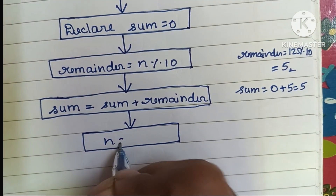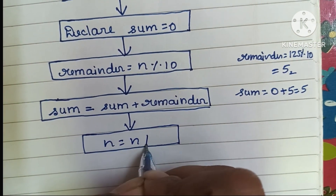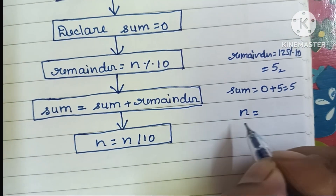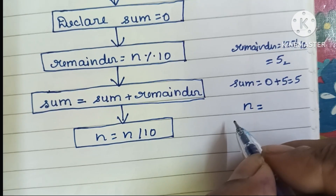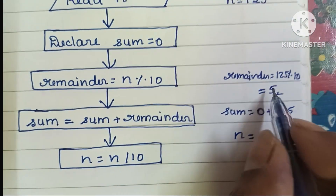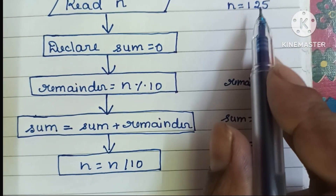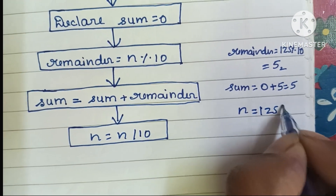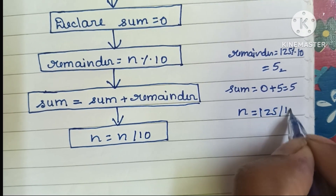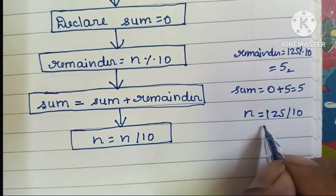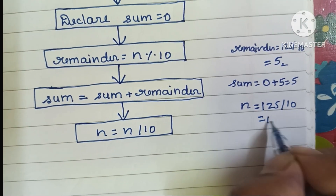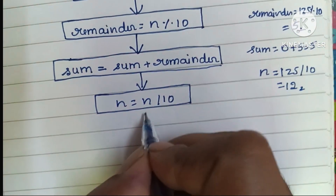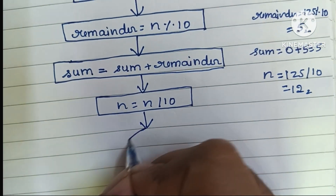Next, we calculate the new N value: N is equal to N divided by 10. Our N value is 125, so 125 divided by 10 gives N equal to 12. Then we check the condition.